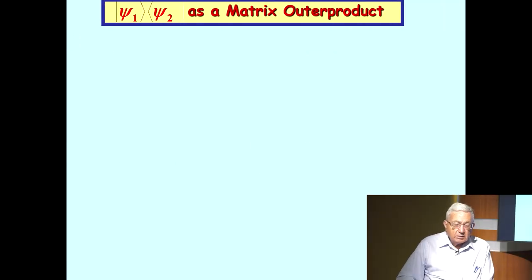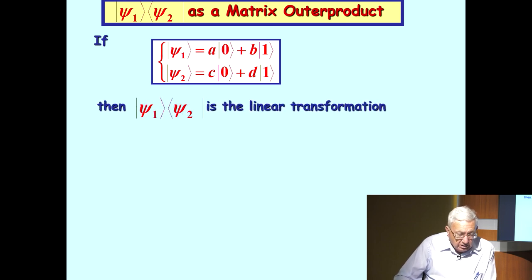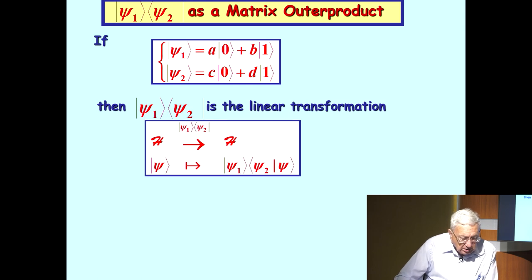There's another way of thinking about bras and kets, or another product. We mentioned the bracket product, but we can reverse the order of the product and produce what is known as the matrix outer product. If we have two kets, ket psi one and ket psi two, we can take ket psi one times bra psi two to produce a linear transformation.